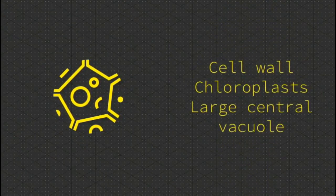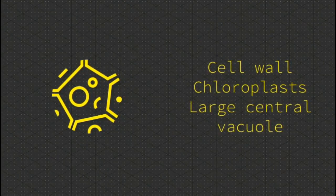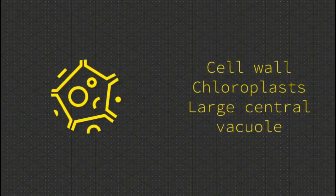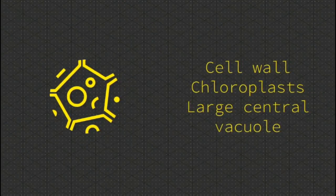They are the types of cells that both plants and animals have. Some of the differences between plant and animal cells are that plant cells have a cell wall, chloroplasts, and a large central vacuole.